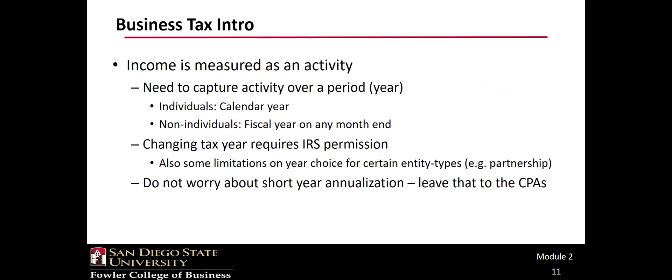Income is measured as an activity, which means the cumulative amount needs to be captured over some period. For individuals, that is almost exclusively the calendar year. Non-individuals can elect a fiscal year, but there are some restrictions depending on the entity type. You cannot just change your tax year whenever you want. For this course, you can ignore the short-year annualization topic.